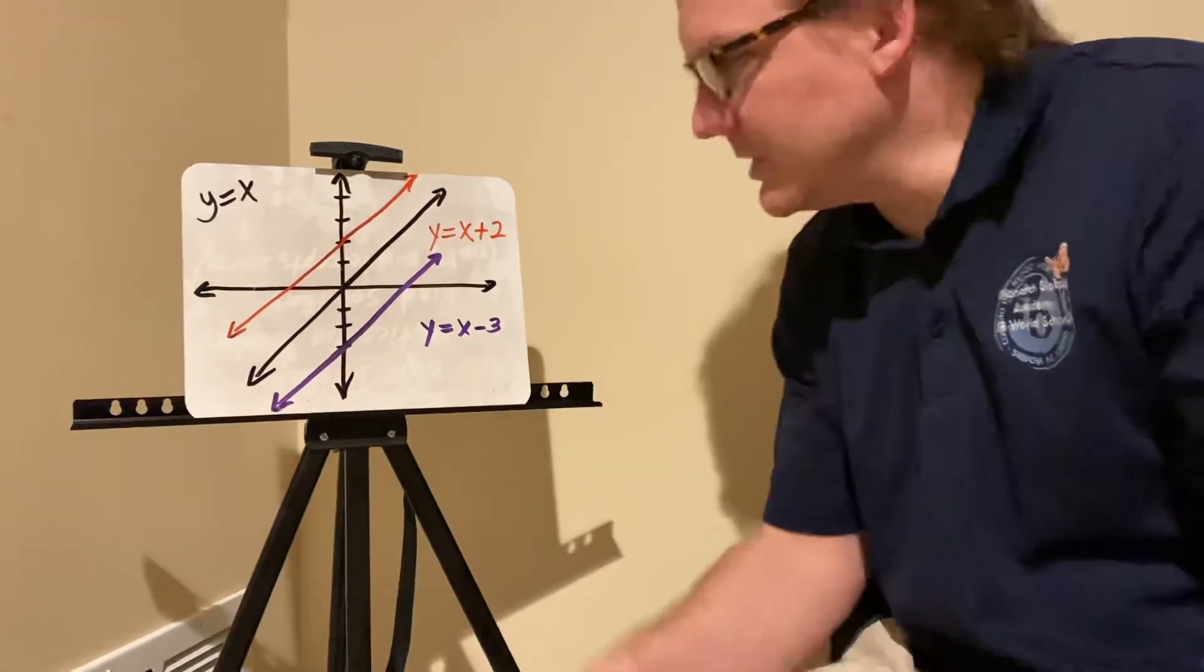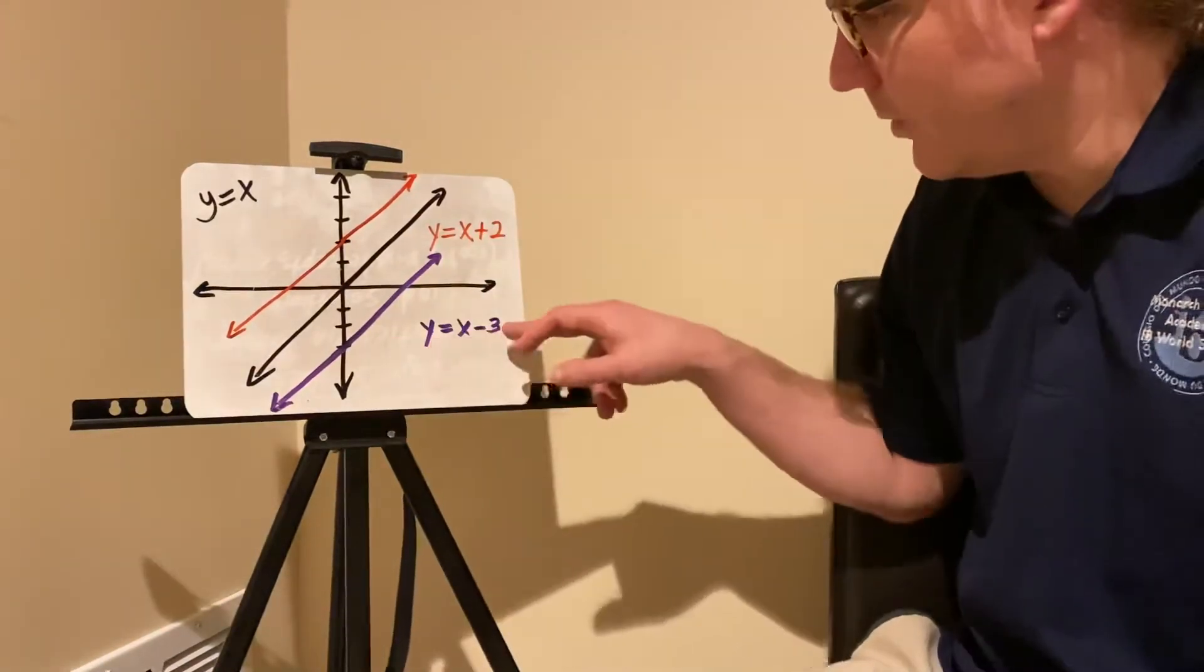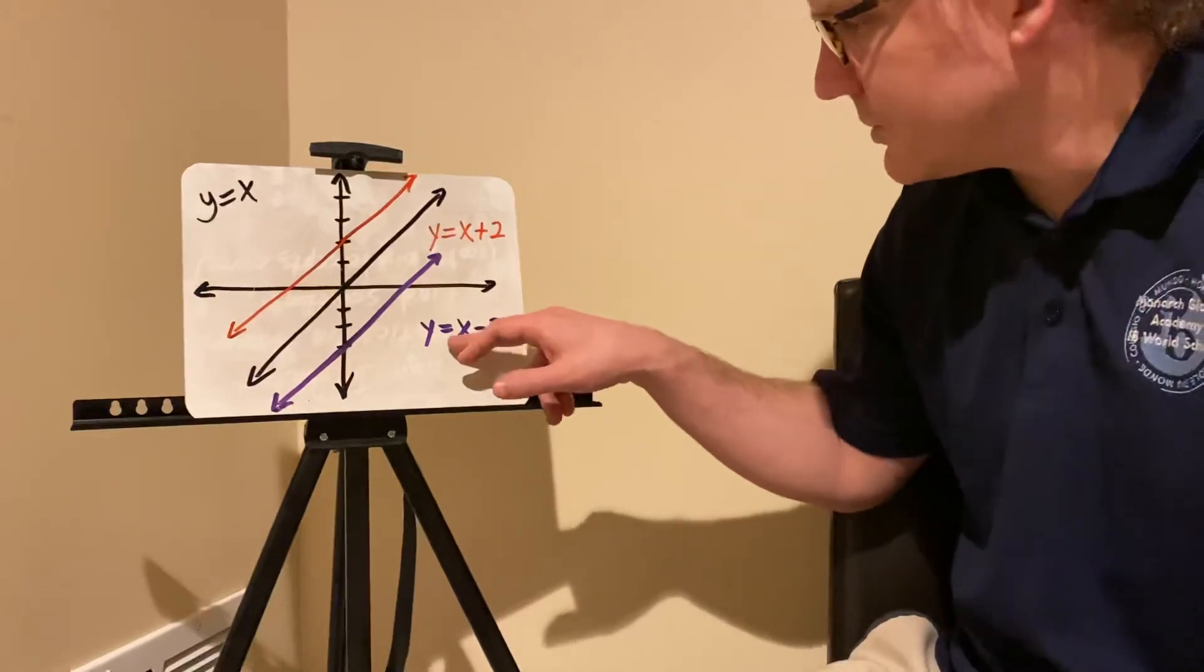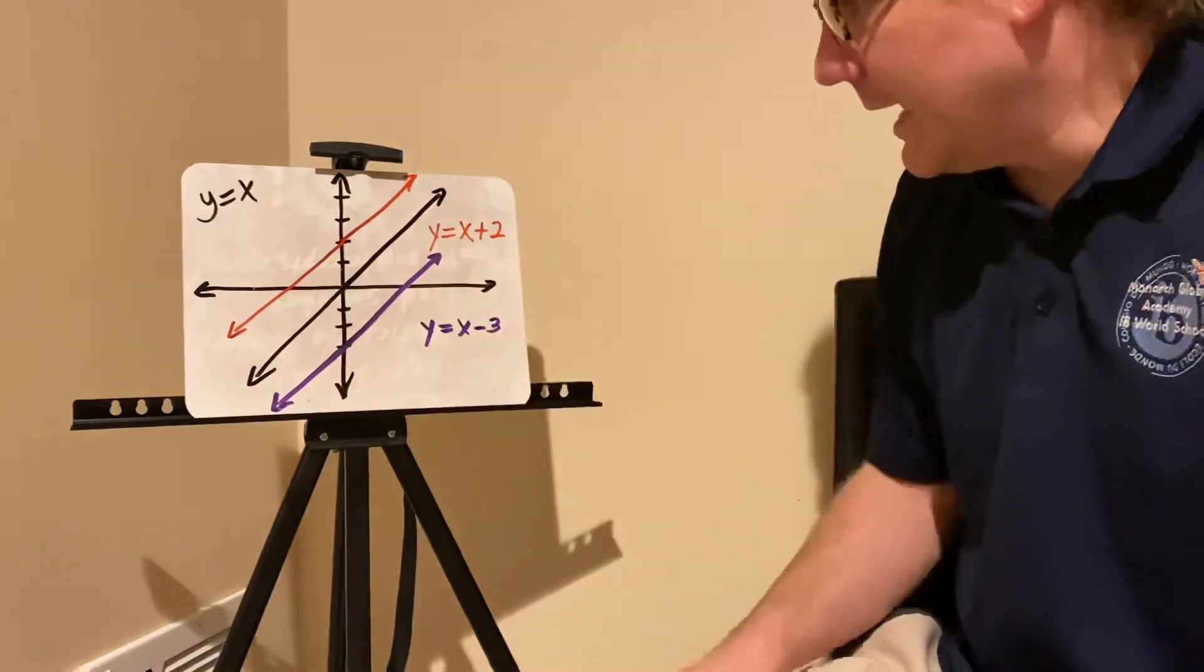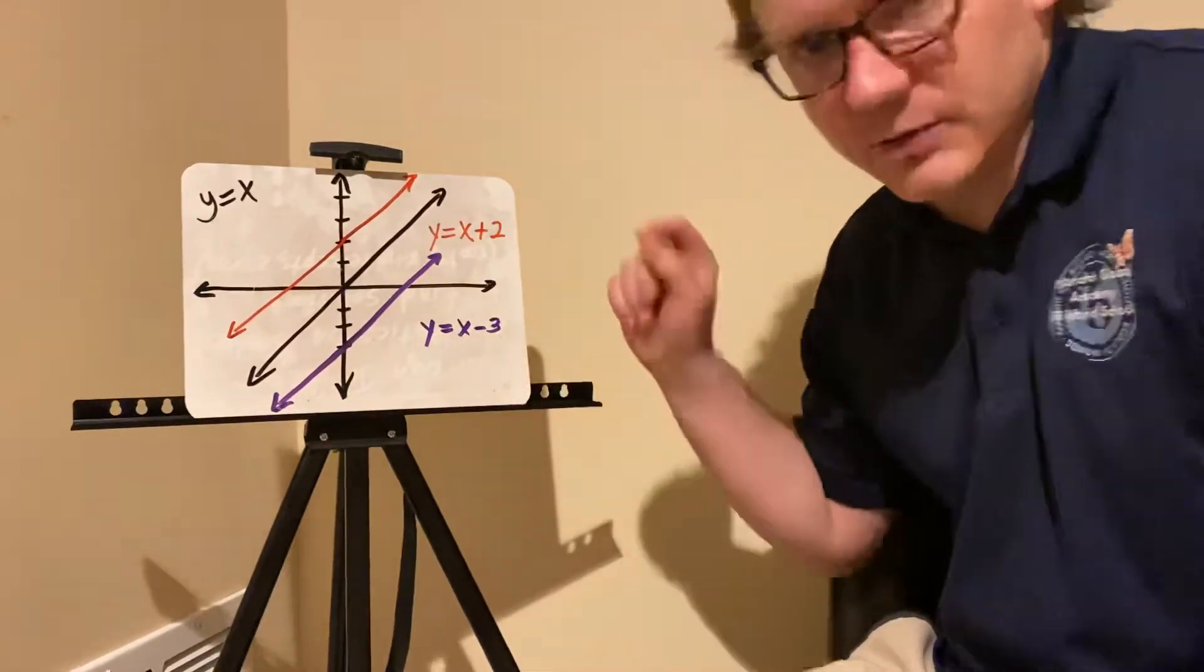When you have them like this, it's much easier to graph them, because you can just say my y-intercept is negative 3. Your slope's in front of the x. So you go to the y-intercept, count your slope, rise over run, and put a second point and draw a line between them.